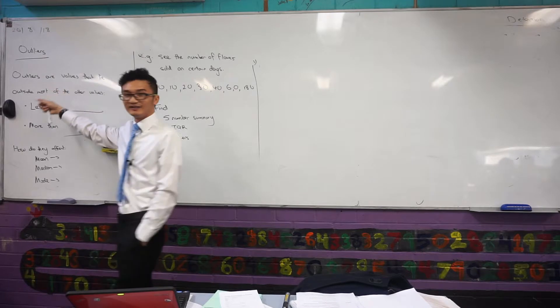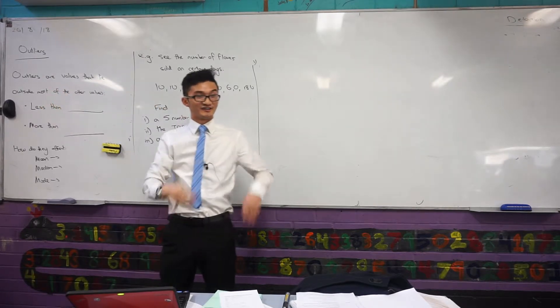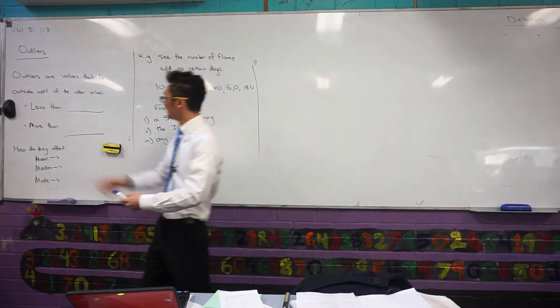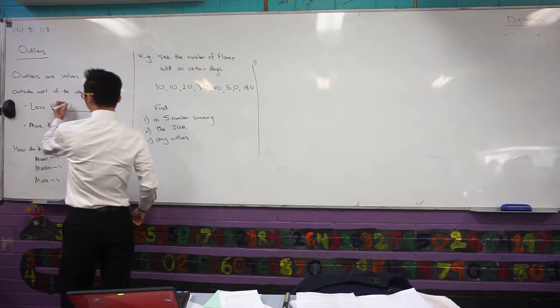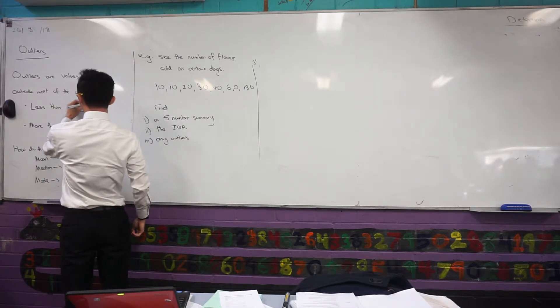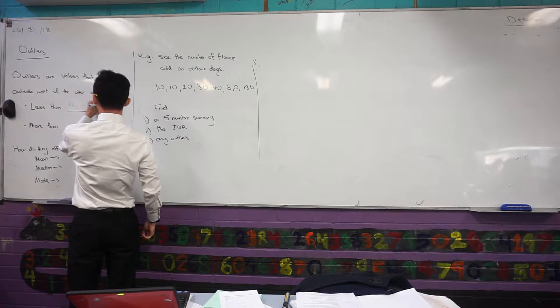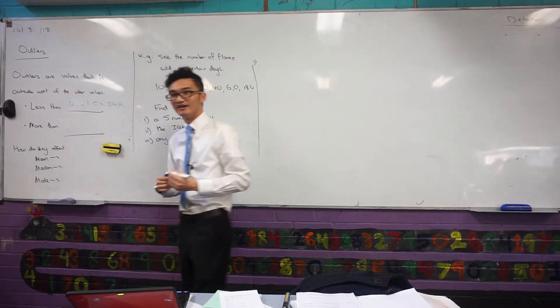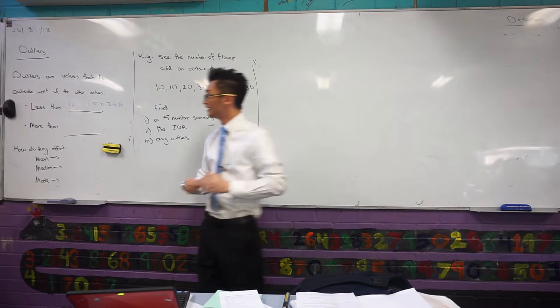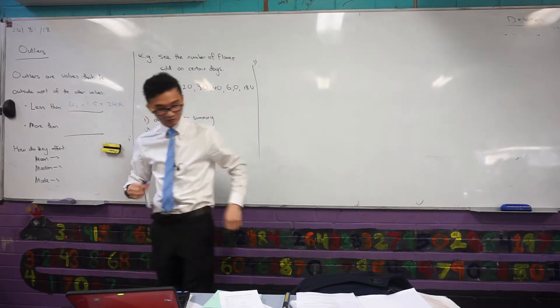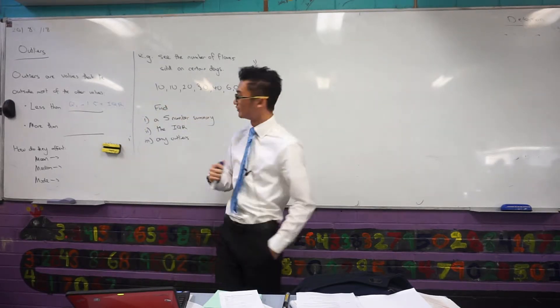So outliers, we agree that they lie outside most of the values. They're either going to be really small or really big. If they're less than Q1 minus 1.5 times the interquartile range, then we say that's an outlier.